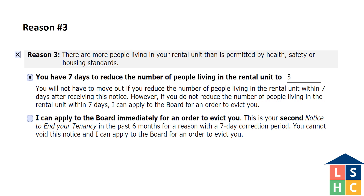Shade in the box next to reason 3 if you are giving this notice for overcrowding. If this is the first N5 notice you are giving to the tenant, shade in the first circle. This notifies the tenant that they can void it if they correct the issue during the seven days following the day they were given the notice. Overcrowding is very difficult to prove. If giving the N5 notice because of overcrowding, first make sure it is actually overcrowded. Check with your local municipality for occupancy bylaws and attach a copy if the number of people violates the municipal requirements. Tenants are allowed under the Residential Tenancies Act to have guests or roommates stay with them for as long as they want. Landlords cannot evict a tenant for having guests or roommates and cannot increase the rent because of the additional people.